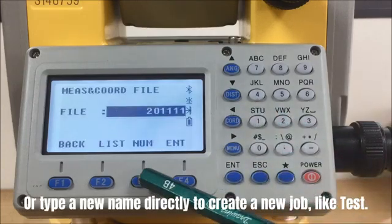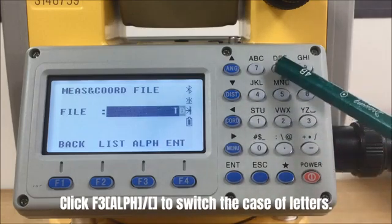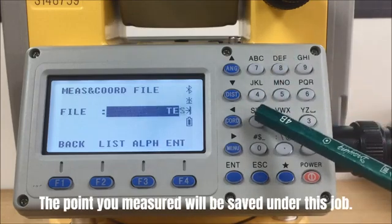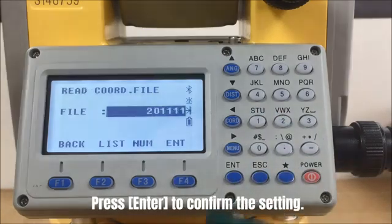Or type a new name directly to create a new job, like Test. Click F3 to switch the case of letters. The points you measure will be saved under this job. Press Enter to confirm the setting.